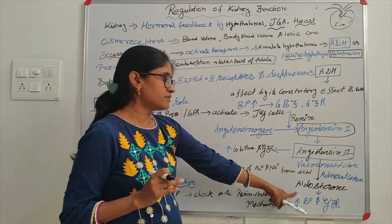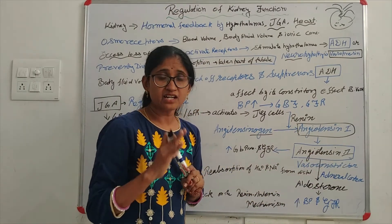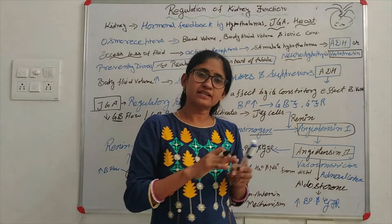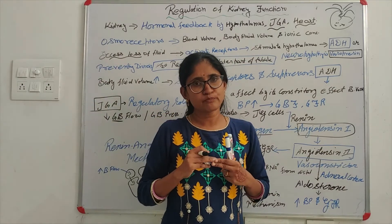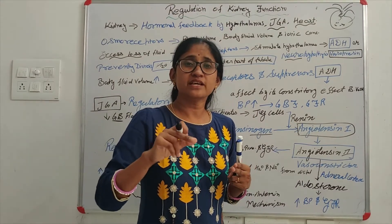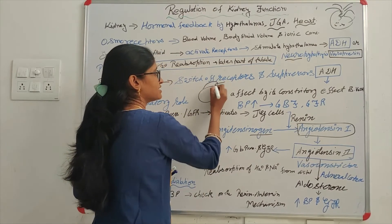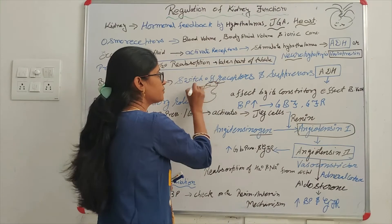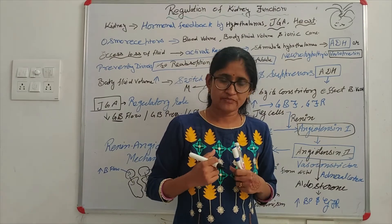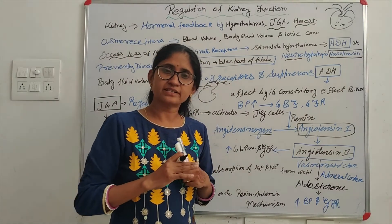Now let's talk about an important thing related to the adrenal gland. The adrenal gland is present on top of the kidney. In the adrenal gland, the outer region is called the cortex and the inner region is called the medulla. The adrenal cortex releases a hormone — this hormone is aldosterone.